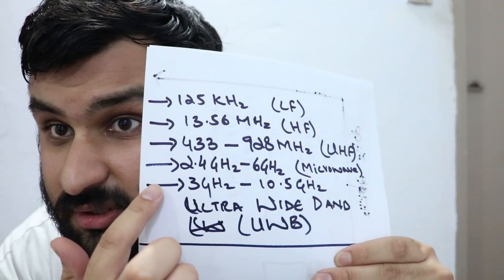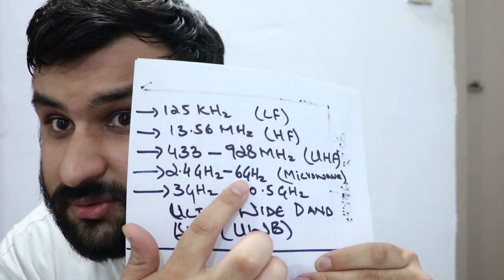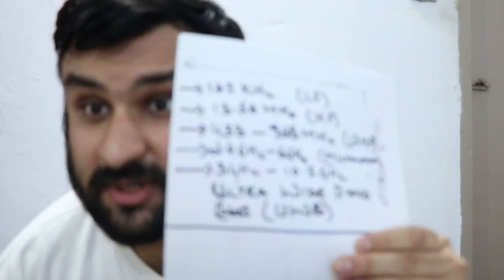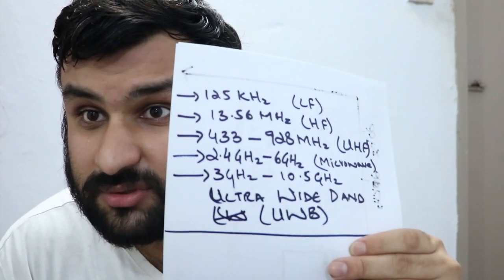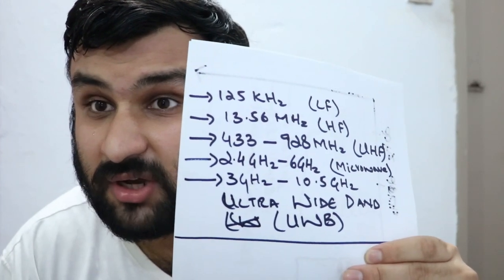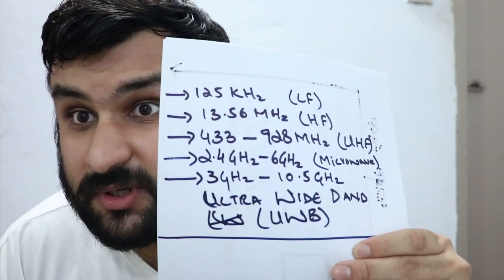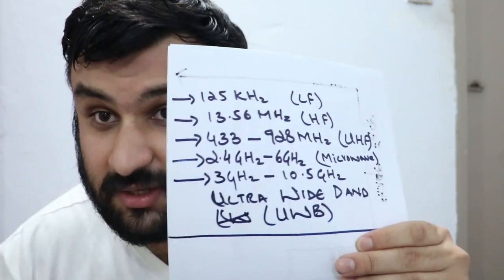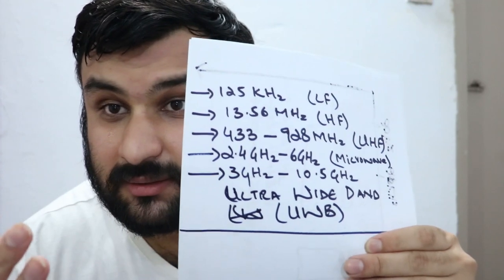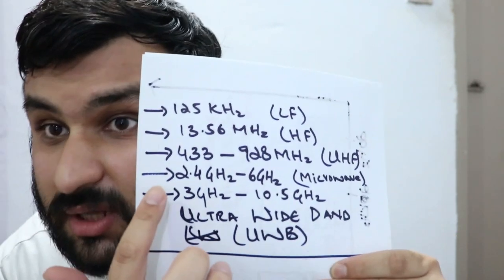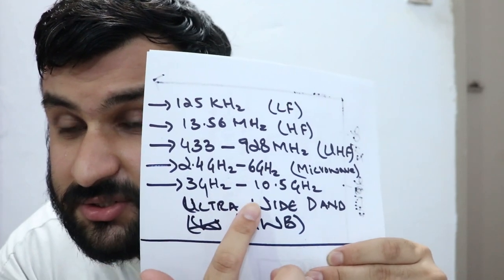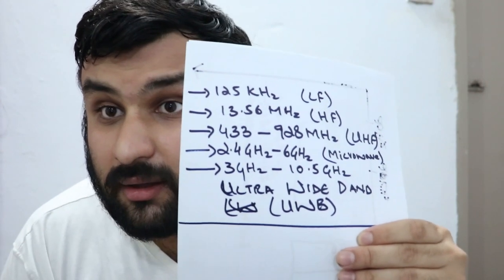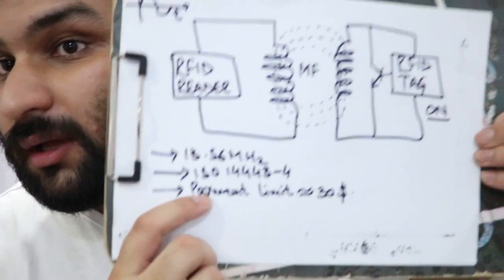Then we go from 2.4 gigahertz to 6 gigahertz. This is the microwave range. 2.4 as I explained earlier is mostly used for WiFi, and 5 gigahertz as well used for WiFi. The new spectrum just opened up in WiFi 6E is the 6 gigahertz which is even faster. Now we are going for 3 gigahertz to 10.5 gigahertz, which is basically used for very sensitive purposes.